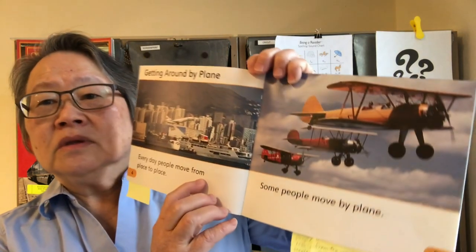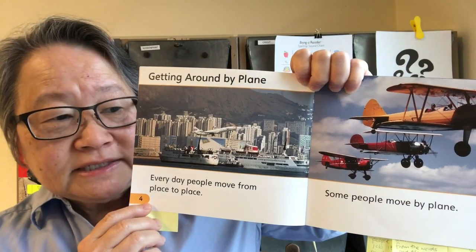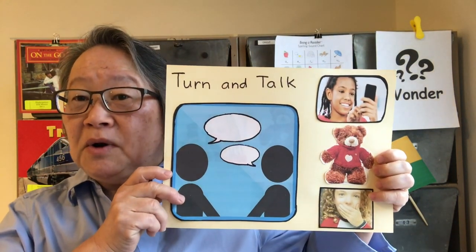Someone would like to know about Getting Around By Plane, which starts on page 4. Getting Around By Plane — every day people move from place to place. Have you ever flown in a plane? What was it like? Go ahead and turn and talk to a partner now. I heard someone say that yes, they had been in a plane and it was a little scary but really fun too. If you hear an idea you also thought about, you can give the Me Too sign.